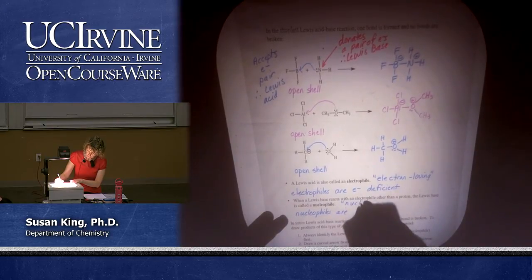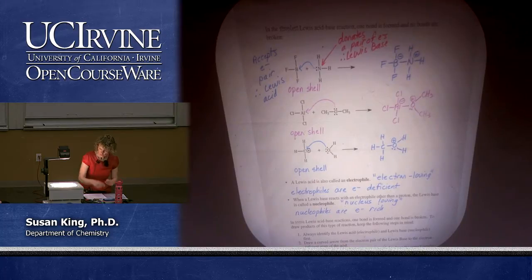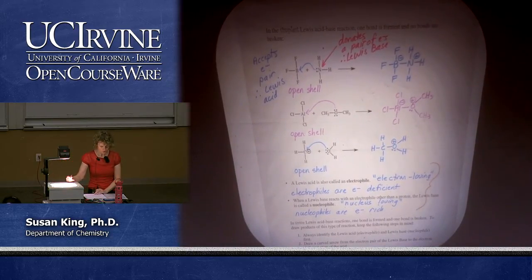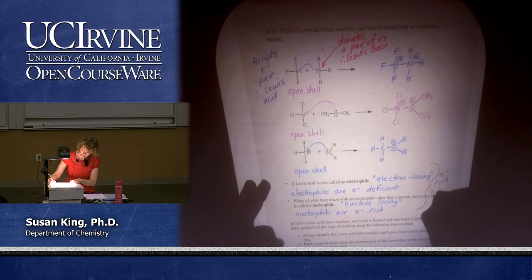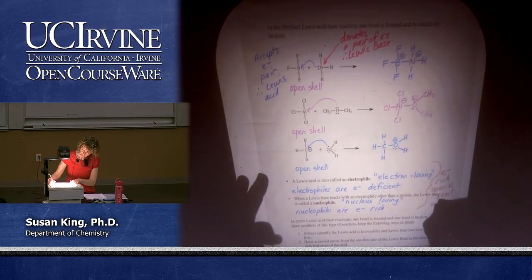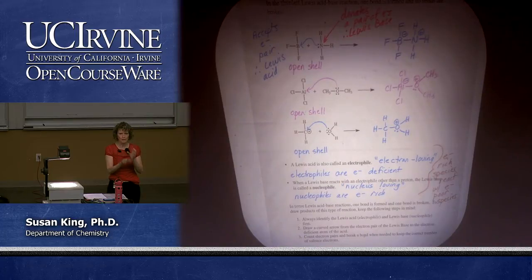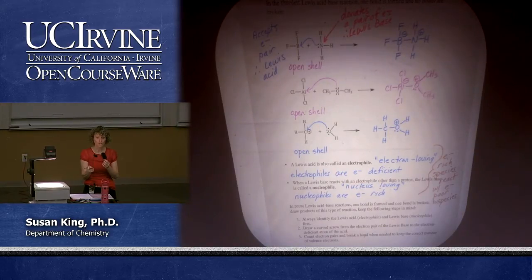Nucleophile means nucleus-loving. Essentially all of the reactivity we're going to see this year boils down to electron-rich species reacting with electron-deficient species. Nucleophiles react with electrophiles. Electrophiles don't react with electrophiles — they're both electron poor and have nothing to offer each other. Nucleophiles don't react with nucleophiles either — they're both electron rich. It's like the rich giving to the poor.